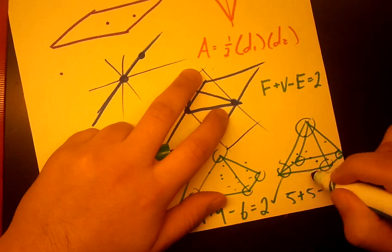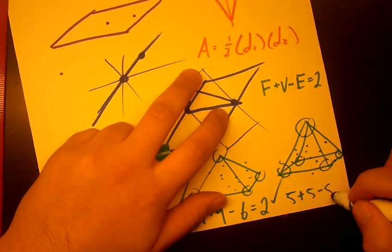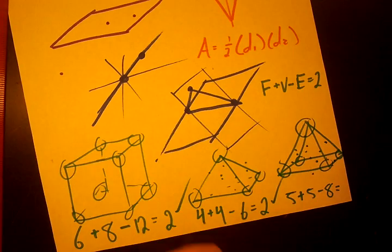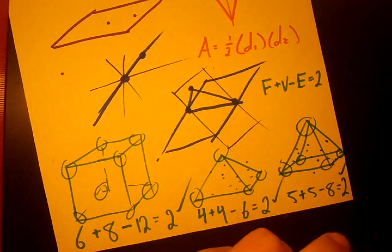And how many edges are there? 1, 2, 3, 4, 5, 6, 7, 8. So 5 plus 5 is 10, minus 8 gives us again 2. So that works.